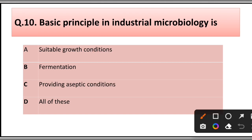Question number ten: The basic principle in industrial microbiology is: A) suitable growth conditions, B) fermentation, C) providing aseptic conditions, D) all of these. The correct answer is option B, fermentation.